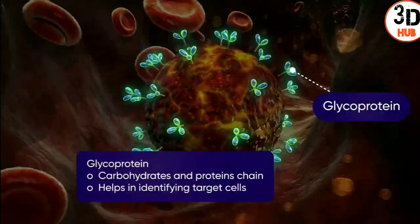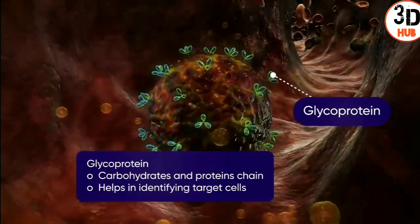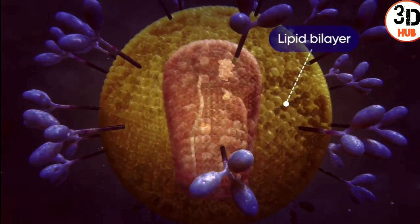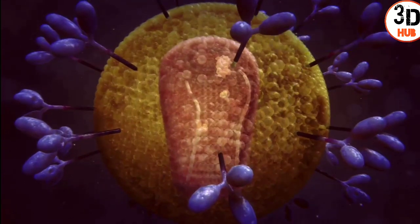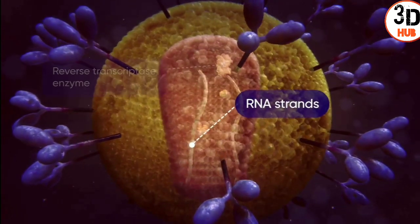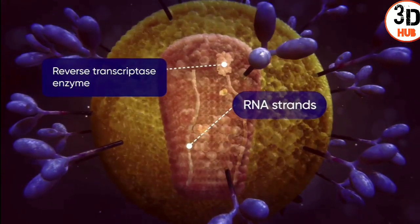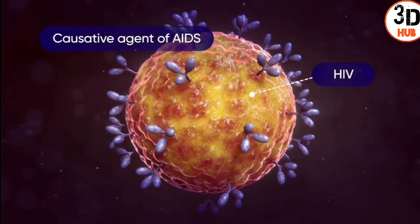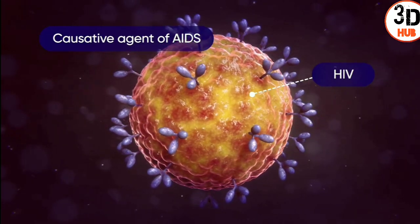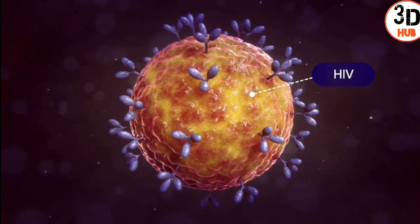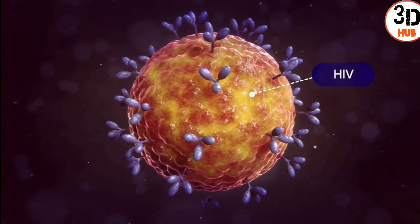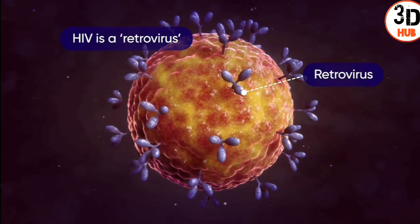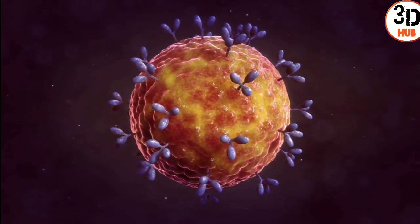HIV has a spherical envelope with several glycoprotein projections which help in the process of binding. It shows the presence of a lipid bilayer and a core. The core consists of RNA strands and a reverse transcriptase enzyme. This virus is the causative agent of acquired immunodeficiency syndrome, or AIDS. HIV is a member of a group of viruses called retroviruses, whose genetic material is made up of RNA.